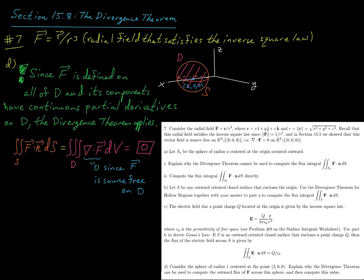For part d, consider the sphere of radius 1 centered at the point (2, 0, 0). This sphere completely misses the origin. Since F is defined on all of D — the solid region enclosed by this sphere — and its components have continuous partial derivatives on D, we can apply the divergence theorem. The divergence theorem then tells us the flux equals 0, because F is source-free on this region D. Since the origin is not enclosed, there is no issue, and the outward flux of F across this sphere is 0.